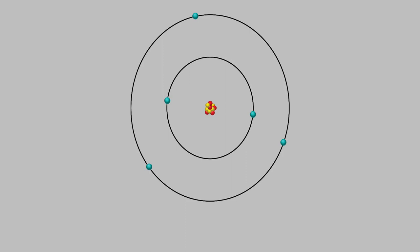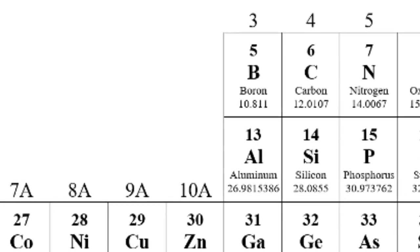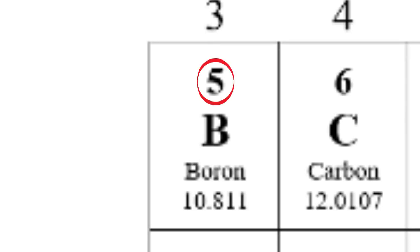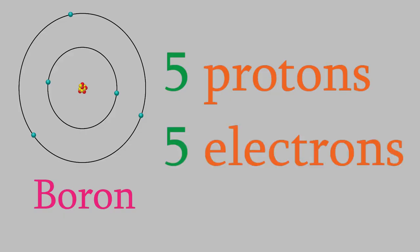I mentioned that a normal atom doesn't have a charge. That means it must have an equal number of protons and electrons, so that the positive protons and negative electrons cancel out. For example, here's a boron atom. Boron has an atomic number of 5, so it has 5 protons. Since it's a neutral atom, it also has 5 electrons. This particular atom also has 6 neutrons, but since neutrons don't have a charge, that doesn't change the fact that it's a neutral atom. The same thing applies when we combine atoms to form molecules — normally, molecules are neutral, so the total number of protons and electrons in a molecule must be equal.